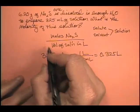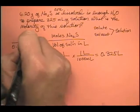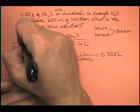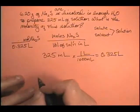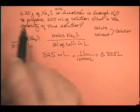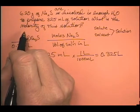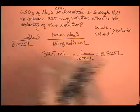So we know the denominator. Right now, we know the denominator is 0.325 liters. So now we have to figure out how many moles of sodium sulfide do we have? How are we going to figure that out? What do we know about it? We know that we have 6.20 grams of sodium sulfide. Well, we can go from grams of sodium sulfide to moles. We just need the molar mass.